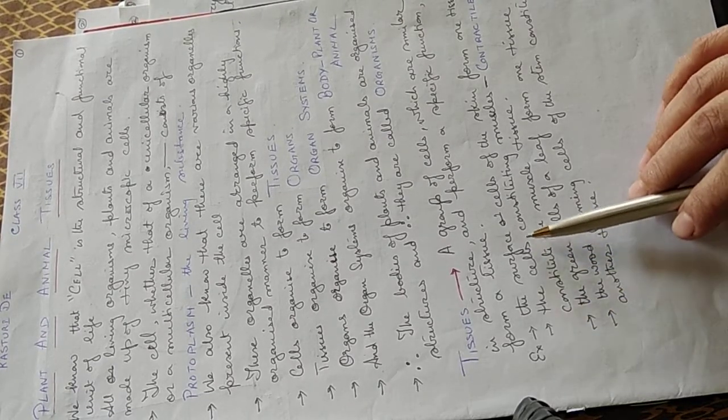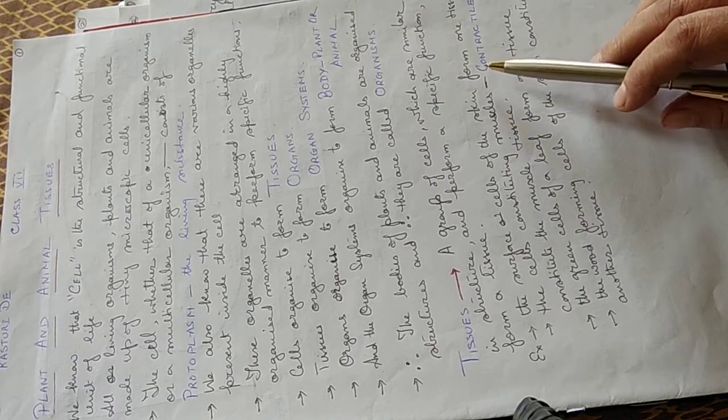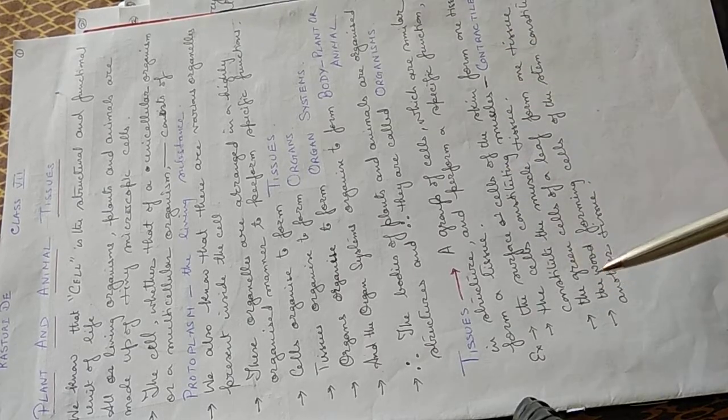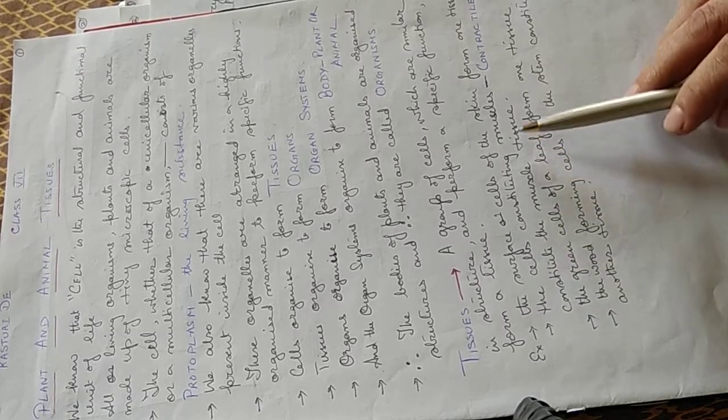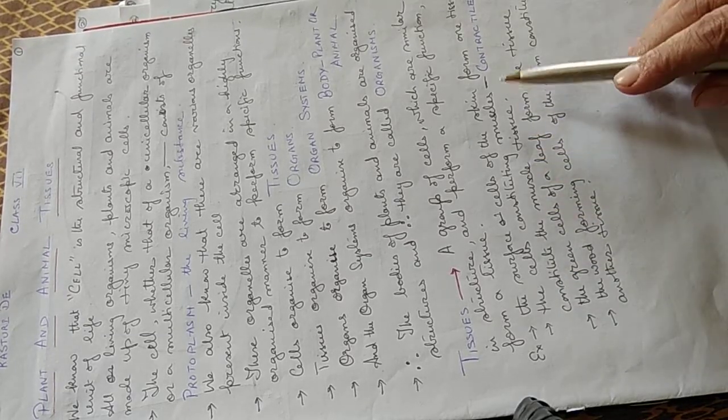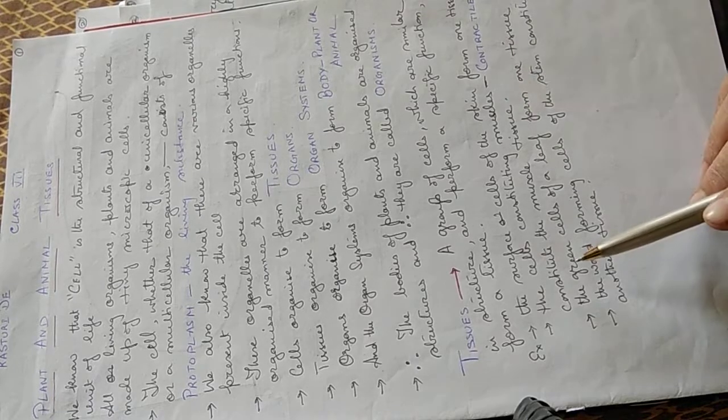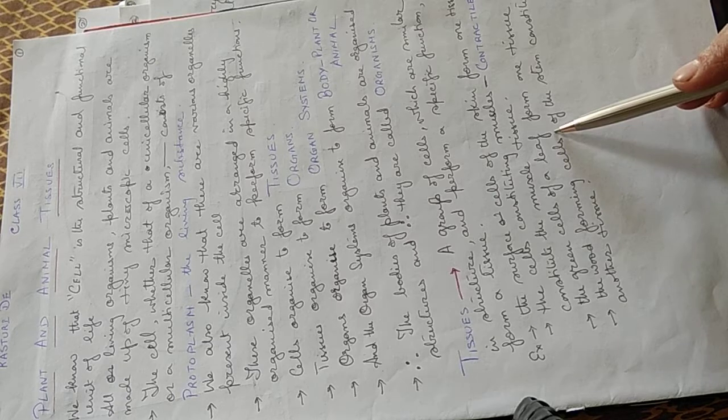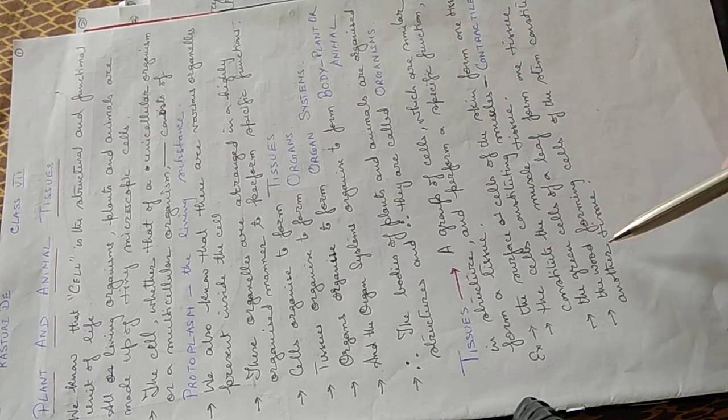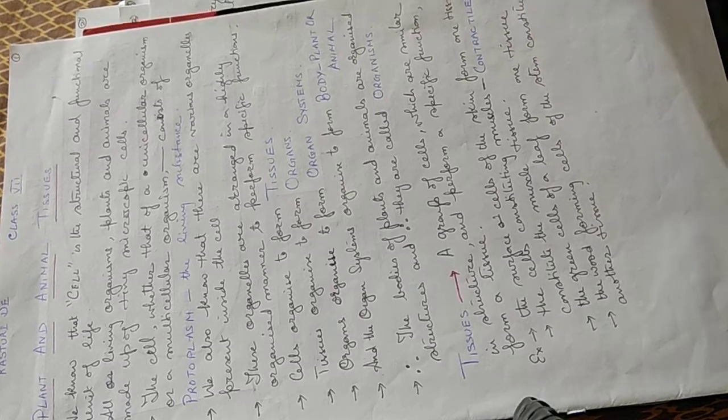For example, the surface cells of skin form one tissue, that is the skin tissue. The cells constituting muscles like contractile muscles constitute the muscle tissue. The green cells of a leaf form one tissue. The wood forming cells of the stem constitute another tissue.